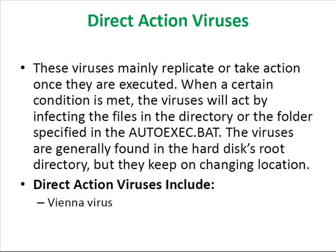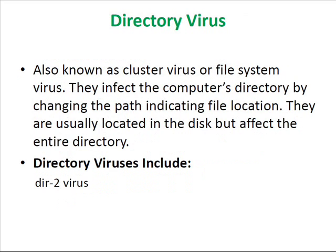Direct action viruses. These viruses mainly replicate or take action once they are executed. When a certain condition is met, the viruses will act by infecting the files in the directory or the folder specified in the autoexec.bat. The viruses are generally found in the hard disk's root directory but keep on changing location. Direct action viruses include the Vienna virus.